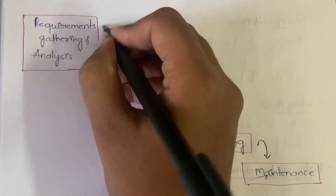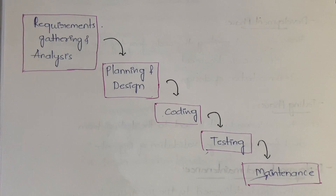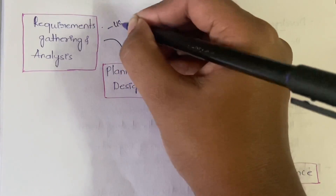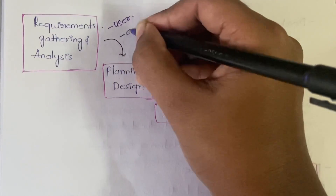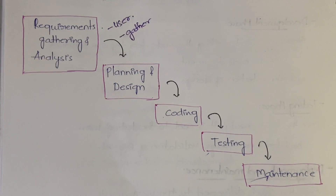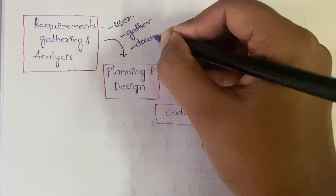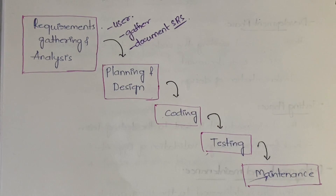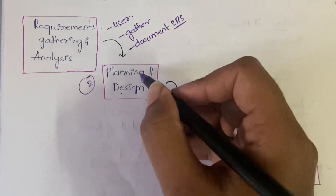The first phase is requirements gathering and analysis. Here, the basic requirements of the system are understood. You gather all the requirements related to the project you are creating. First you understand the requirements from the user, then you gather all of them, make sure all requirements are with you, and then you document those requirements in the SRS document — the Software Requirements Specification document.